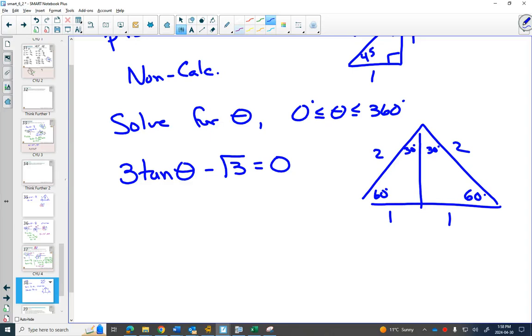So first of all, as an equation, I want to get this by itself. So I'm going to move over the root 3 by adding root 3 to both sides, and then I'd be able to divide by 3. Are you okay if I do that in one step? Move over the root 3, and then divide by 3.